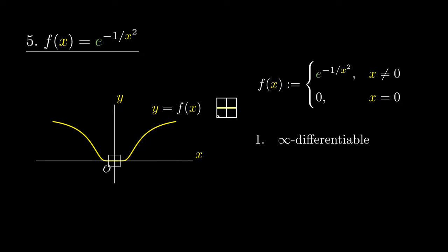If we visually look at the gradient of the point at the origin, we're going to see that it's really really flat. In fact, all of its derivatives at the origin are 0.